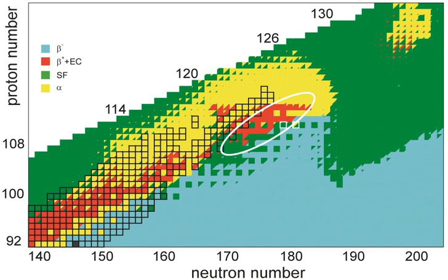Later calculations suggest that the cross-section of the 3N reaction which would result in 299Uue and 3 neutrons as products would actually be 600,000 times lower than this upper bound, at 0.5 pb. As ununennium is the lightest undiscovered element, it has been the target of synthesis experiments by both German and Russian teams in recent years. The Russian experiments were conducted in 2011, and no results were released, strongly implying that no ununennium atoms were identified.